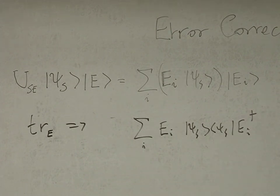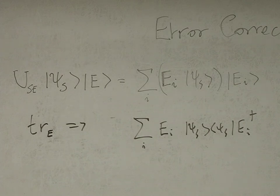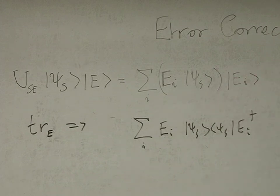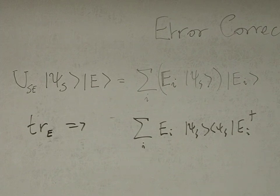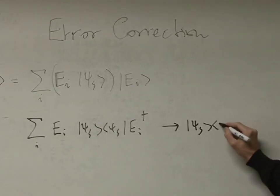The question is: can you invert this kind of map? In order to invert, you've got to have the information within the system itself as to which of these E_I's has happened. Not only does your environment record that, but part of your system — which you're going to destroy just to measure it and recover the initial state — has to also record it. So basically I want to go back to this deterministically.